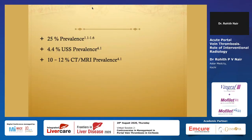Overall prevalence of PVT is about 25%. In asymptomatic patients on ultrasound, we see about 4.4% with portal vein thrombosis when completely asymptomatic. On CT or MRI follow-up, we see about 10 to 12% of patients. That has been reiterated again and again in various studies across the world.